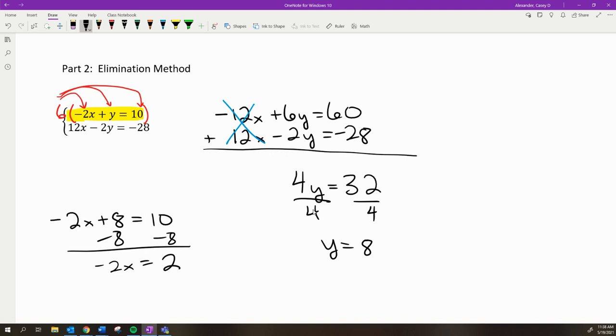I get -2x = 2. Then divide both sides by -2, and I get x = -1. That's the same x as the other problem, but that's just how it worked out. I had to